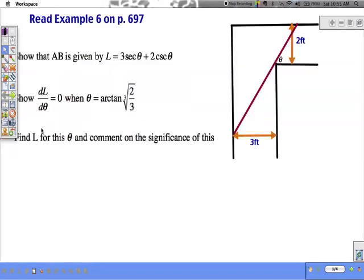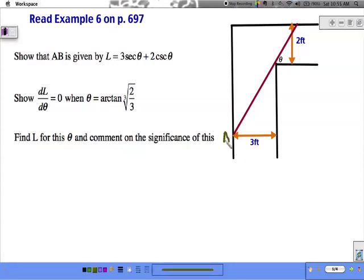So if we diagram this, we get this picture. We have our hallway. We have our red pipe being taken around the corner. And we want to show that AB, there to there, is given by this formula.